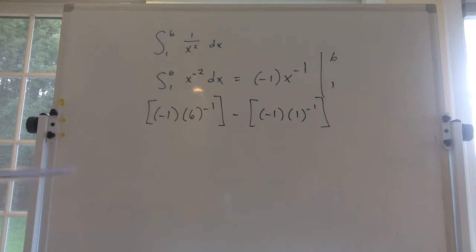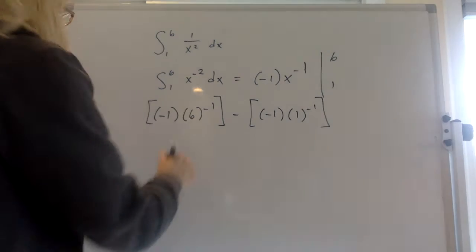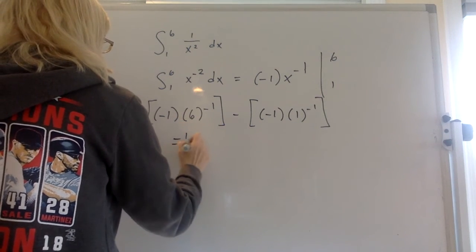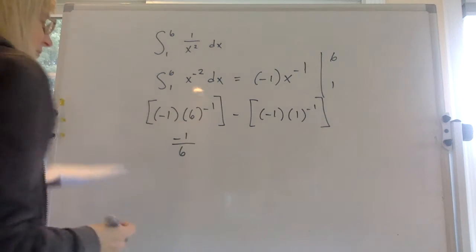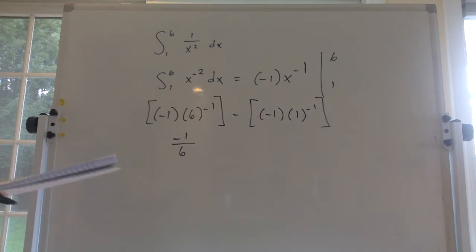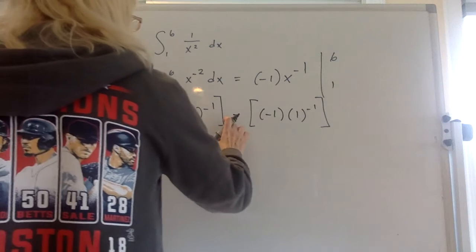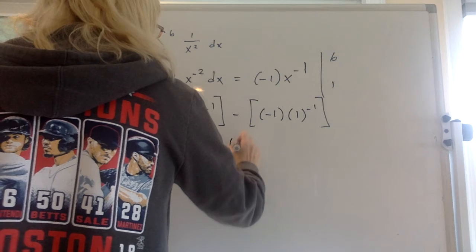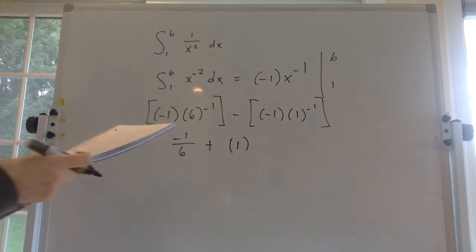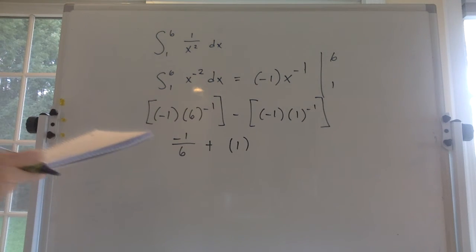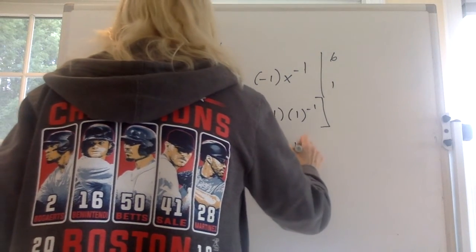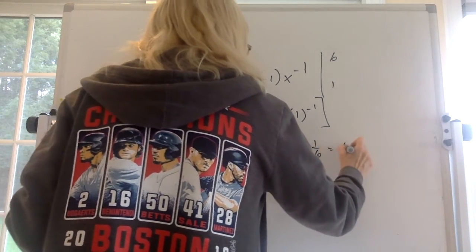Okay, so let's see, what does that come out to? Negative 1 times 6 to the negative 1, that's negative 1 over 6, because 6 to the negative 1 is 1 sixth, right? Minus a minus, so we have a plus here, and that's just a 1. 1 to the negative 1 is just 1, right? So you actually have just 1 minus 1 sixth equals 5 sixths.